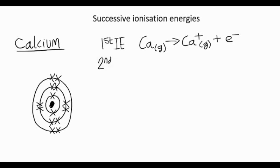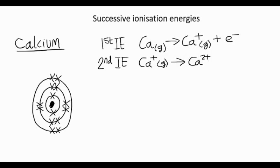The second ionization energy is the energy required to remove the second electron from that calcium plus ion. And it takes a bit more energy because we're removing a negative electron from a positive ion. So we make a calcium 2 plus ion plus a free electron.